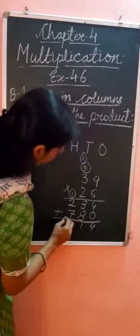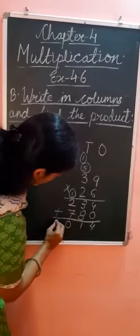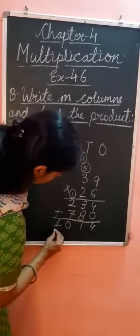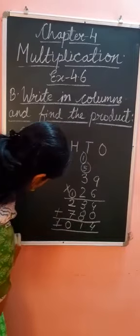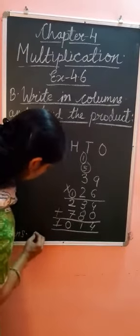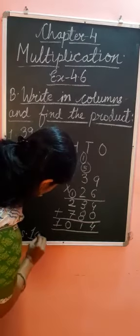So 0 we write in hundreds place and 1 in thousands place. So we get the answer 1014.